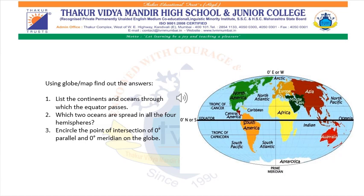Look at the image and find out answers to the following questions. Question 1: List the continents and oceans through which the equator passes. Answer: South America and Africa are the continents through which the equator passes, and the Atlantic Ocean, Pacific Ocean, and Indian Ocean are the oceans through which the equator passes.